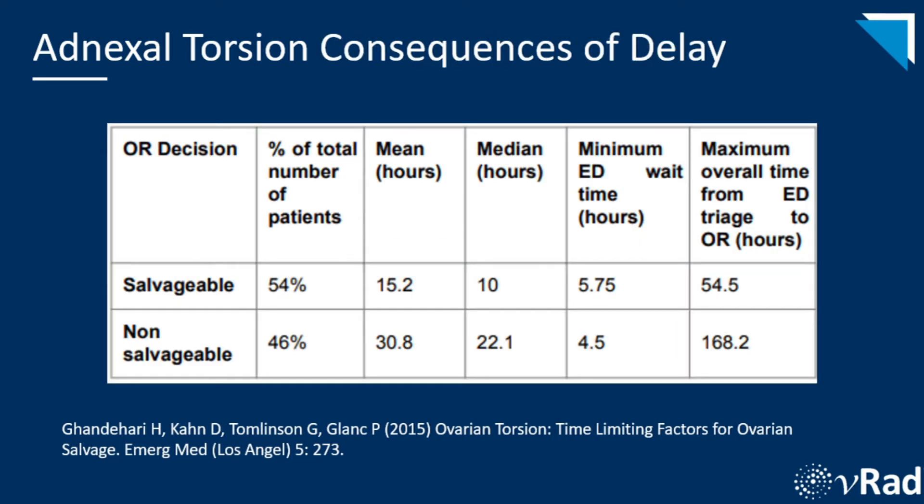This table summarizes the time difference between patients who still had a salvageable ovary at surgery and those who did not. The longer the delay to surgery, the less chance there is of saving the ovary. Both mean and median timelines from ED triage to OR were significantly longer in the non-salvageable group, with a p-value of less than 0.01. The mean time from ED triage to OR was approximately 15 hours in the salvageable group, versus almost 31 hours in the non-salvageable group. In this series, the longest time to surgery with a salvageable ovary was about 54 hours.